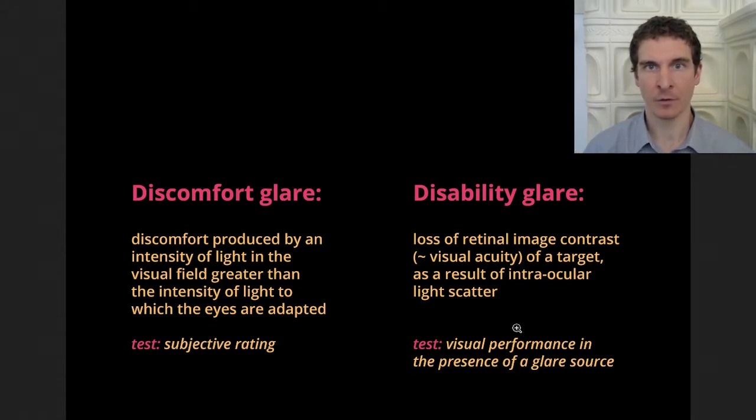This type of intraocular scatter affects primarily disability glare. Not so much discomfort glare, which is how painful the glare source is, but disability glare means that any target, which is not the glare source itself, is going to be less likely to be detected. We saw that bluer headlights increase disability glare, and aging also increases disability glare.